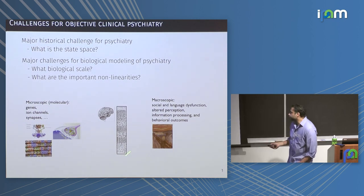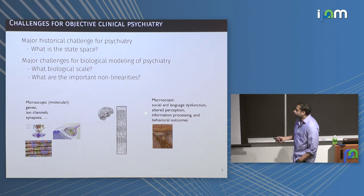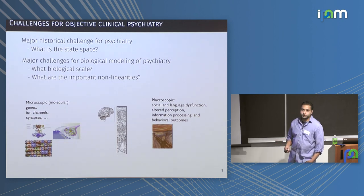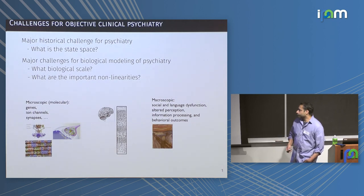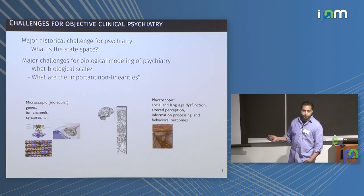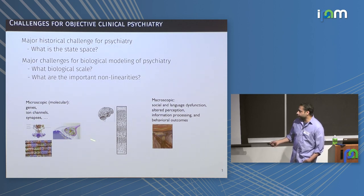The things that we're interested in clinically are at a very high level — social and language function, perceptual abnormalities like illusions and hallucinations. But we know from classic pedigree studies and more recently with GWAS, and of course therapeutics, that these have their grounding in a molecular basis at the cellular level. Somehow these perturbations are percolating all the way up to this macroscopic level.